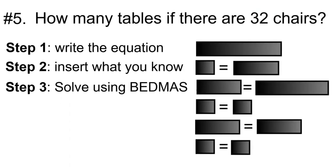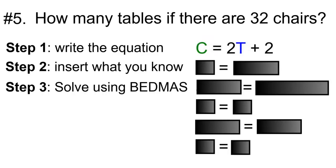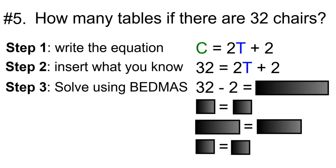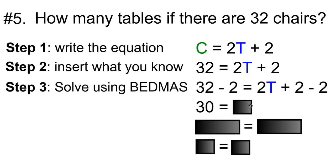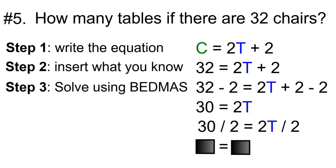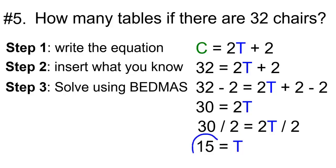Number five: How many tables are there if there are thirty-two chairs? Step one: write the equation — C is equal to two times T plus two. Step two: insert what you know. Thirty-two is equal to two times T plus two. Then we're going to solve using BEDMAS. Remove two from both sides: thirty-two minus two is thirty, and two T plus two minus two is just two T. Next, divide both sides by two. Thirty divided by two is fifteen, and two T divided by two is T. So the number of tables will be fifteen.